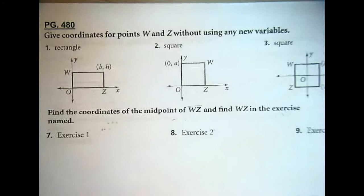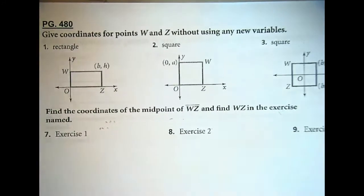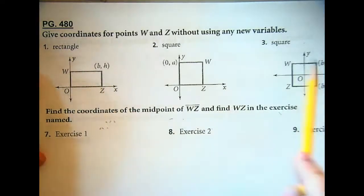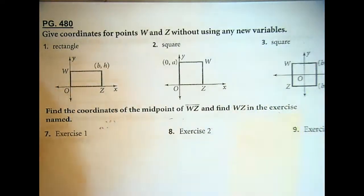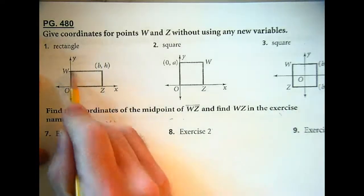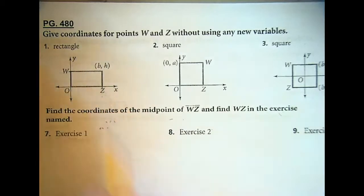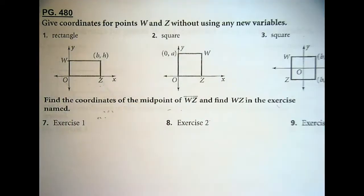Page 480 — giving the coordinates for points W and Z without using any new variables. In coordinate proofs, we're using shapes in the coordinate plane. Work with your neighbor right now to figure out what these coordinates are for those two points. You can't use any new variables that aren't already on that coordinate.